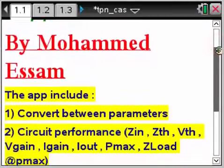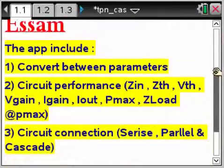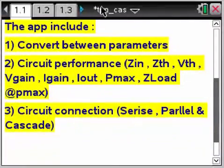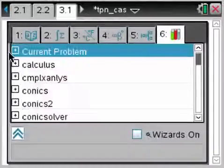In this activity we will solve two port networks in TEXAS TI CX CAS. We can convert between parameters Z, Y, H and A. Solving circuit performance and connection between two parameters, let's start.